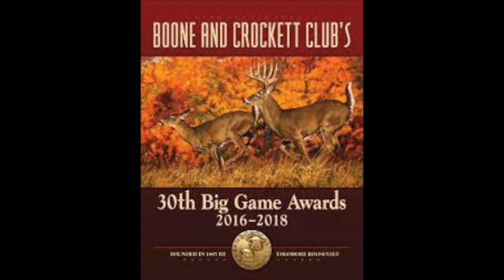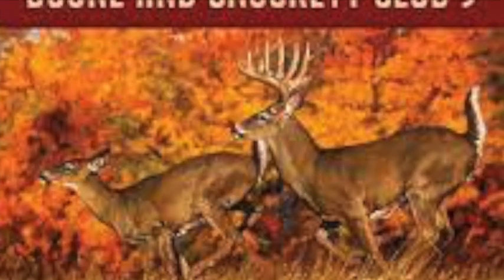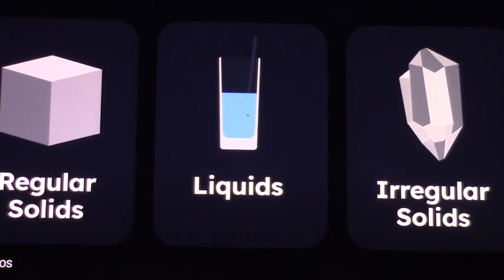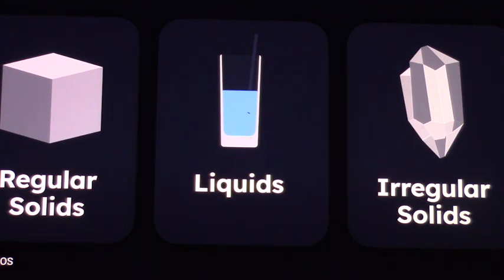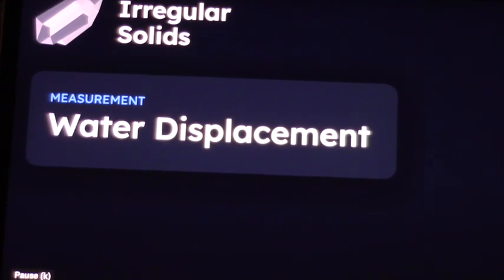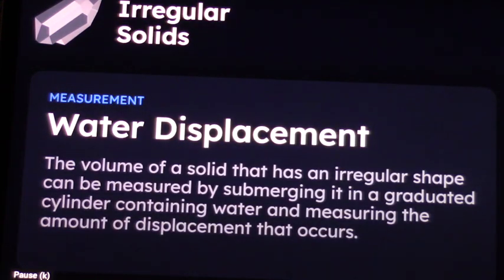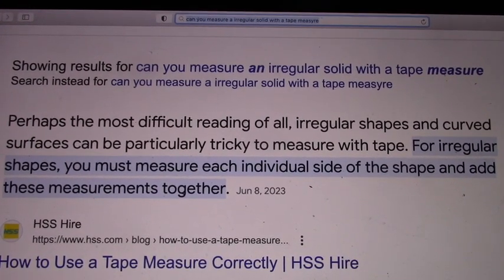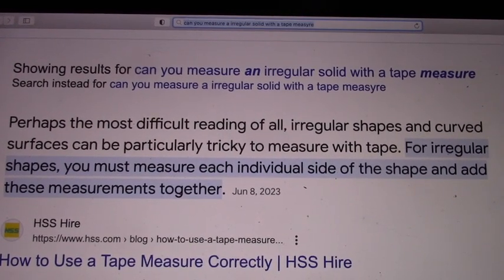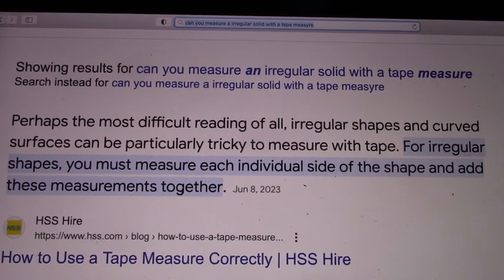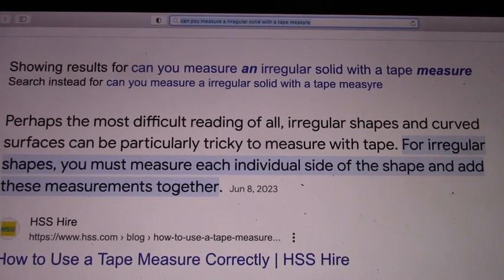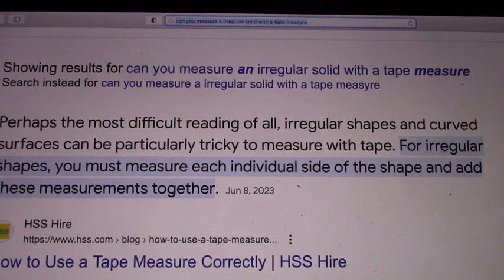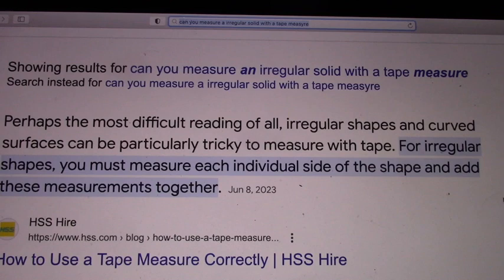In the Boone and Crockett record book of measurements, everything that they measure in that book is in irregular shape or irregular solids. And in order to be measured properly, there's a difference. Regular solids and liquids — this is scientific terms I took right out of Mr. Google — a regular solid can only be measured by water displacement because that's the scientific way they do it. And that's the way I do it with the C-tags, because there's no way a quarter-inch tape can do it. Perhaps the most difficult reading of all: irregular shapes and curved surfaces can be particularly tricky to measure with tape. For irregular shapes, you must measure each individual side of the shape and add these measurements together.